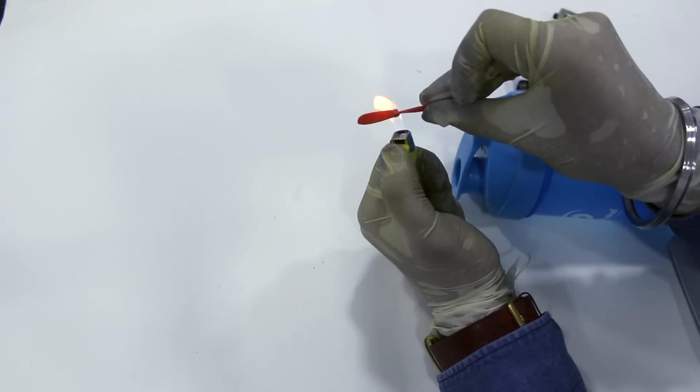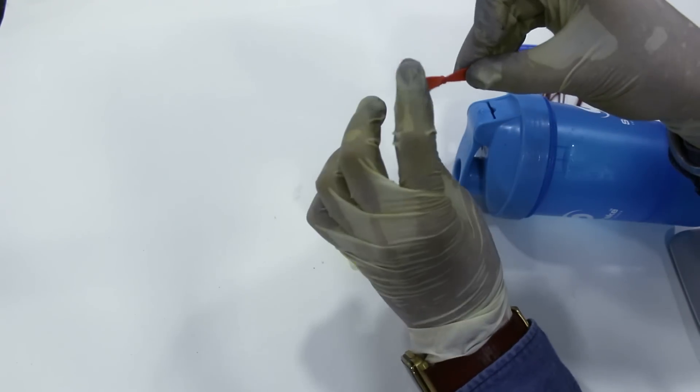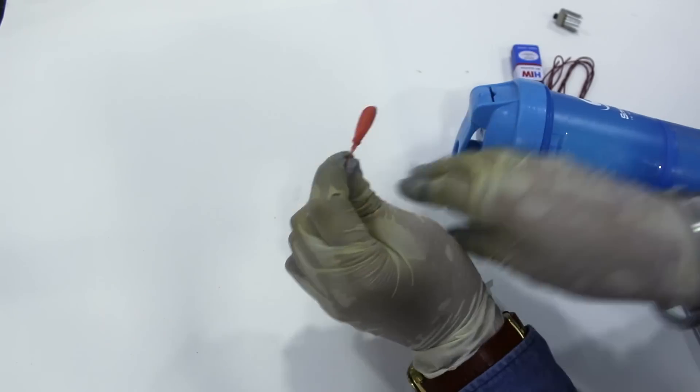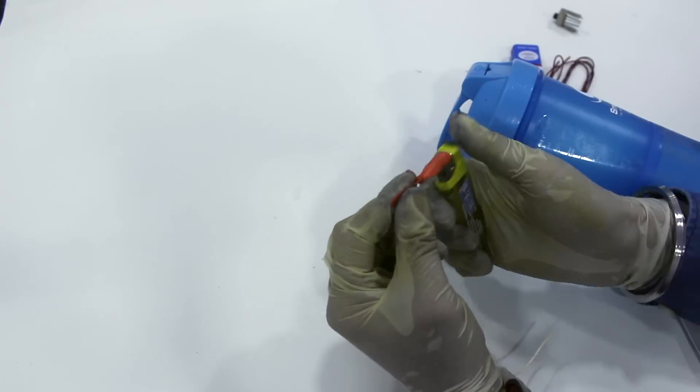Now we take a small fan propeller and then we use a lighter to twist the blades of the propeller so that it rotates the water as it spins.